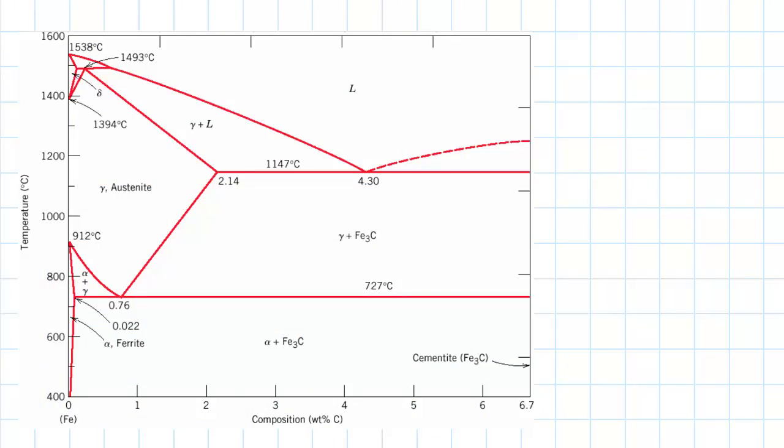Okay so I have this iron carbon phase diagram again which you should be familiar with by now. So first I just want to have a think about what happens if we're at that eutectoid reaction point, so at the 0.76.